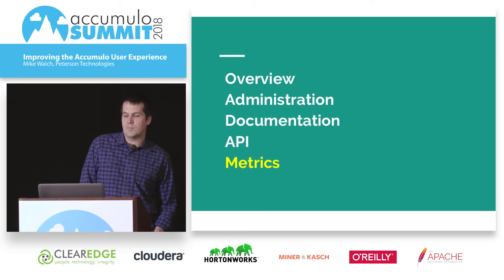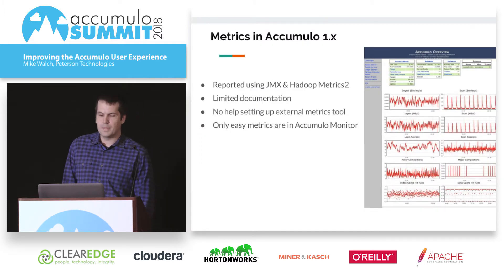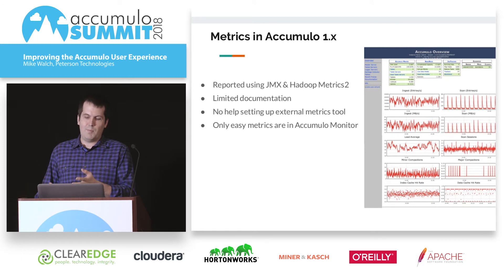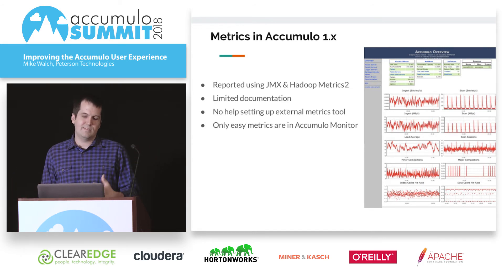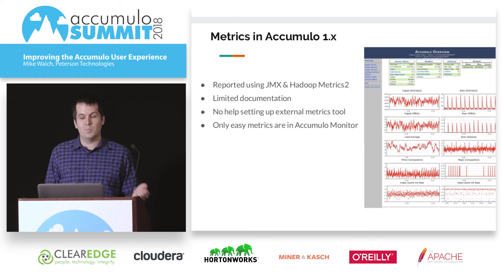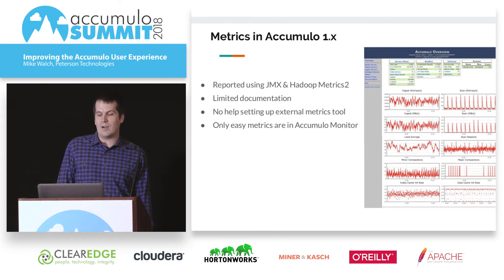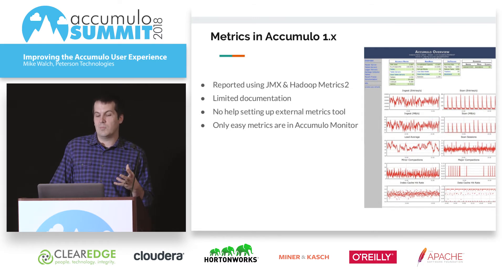Next I'm going to talk about how metrics have been improved. In Accumulo 1, you had metrics in the monitor, which are good, but limited to the past two hours with only about eight or ten graphs. It's really useful for monitoring Accumulo in the moment, but going back in time is difficult. You can report metrics using JMX and the Hadoop metrics too, but there's really no documentation for setting that up. You have to be a really advanced user to look into that library, figure out how it works, and set up your own metrics database and viewer. It's just a lot of work for someone new to Accumulo.